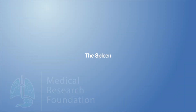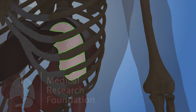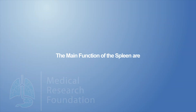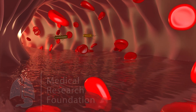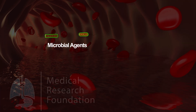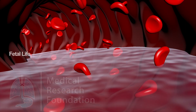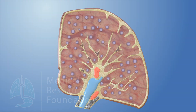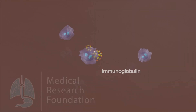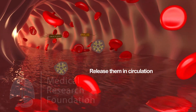The spleen is the largest lymphoid organ in the body — strictly speaking, a hemolymphoid organ. The main functions of the spleen are to filter blood by removing worn-out RBCs and microbial agents from the circulation, to manufacture RBCs in fetal life and lymphocytes after birth, to provide immunity by producing immunoglobulin M, and to store RBCs and release them into circulation when required.